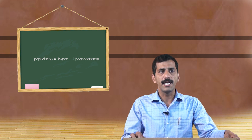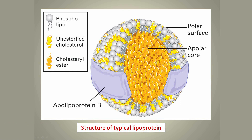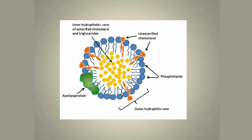Structurally, lipoproteins are made up of a ball-like structure. The outermost layer of the lipoproteins is made up of amphipathic lipids, and the central core of the lipoprotein is made up of totally non-polar lipids. So the outermost layer consists of polar cholesterol and phospholipids, and the central core is made up of triglycerides, long chain fatty acids, and cholesterol ester.